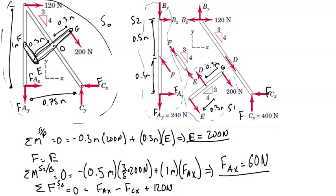Sum of the forces in the x direction for system S0, we have Fax minus Fcx plus 120 newtons is equal to 0. Plugging in 60 newtons for Fax, we find that Fcx is equal to 180 newtons. Now we have solved for all the reactions.